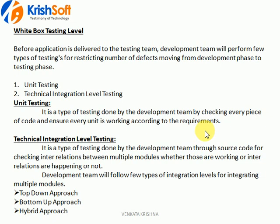The second type is technical integration level testing. Here, the development people integrate the application - combining different modules or different features. There are three different approaches they follow: top-down approach, bottom-up approach, or hybrid approach. The choice depends on their preference, or what is suggested by the project manager or the client.